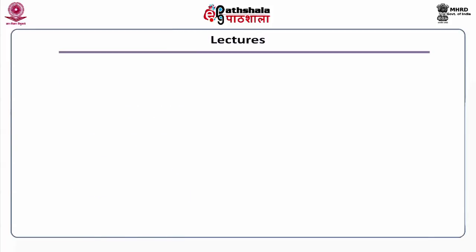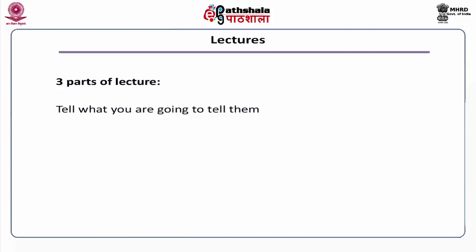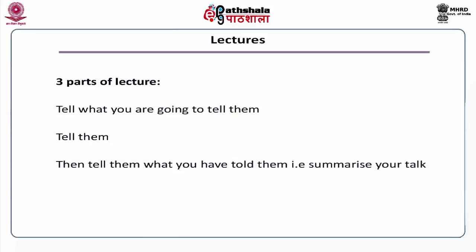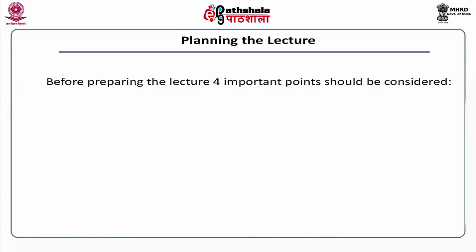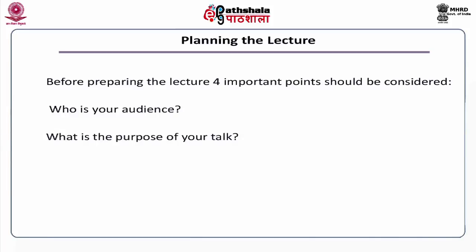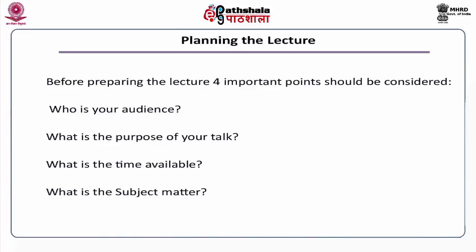The lecture method has three parts: we need to tell the audience first what we are going to tell them, then we need to tell them, and then we need to tell them what we have told them — that is, we summarize our talk. When planning a lecture, a trainer should take into account four things: who is your audience, what is the purpose of your talk, what is the time available, and what is the subject matter.